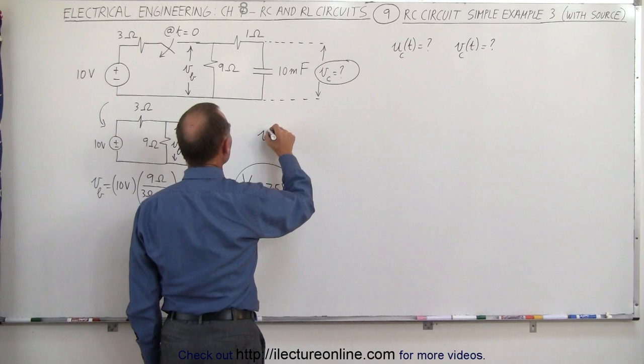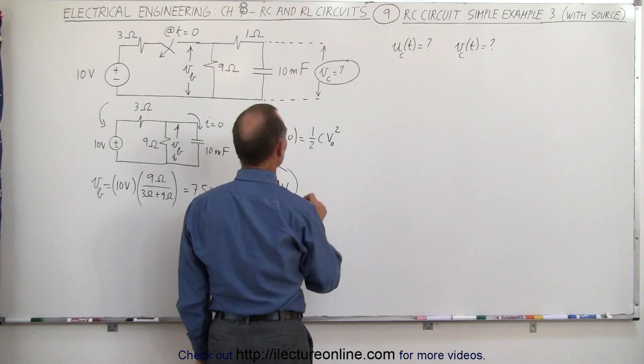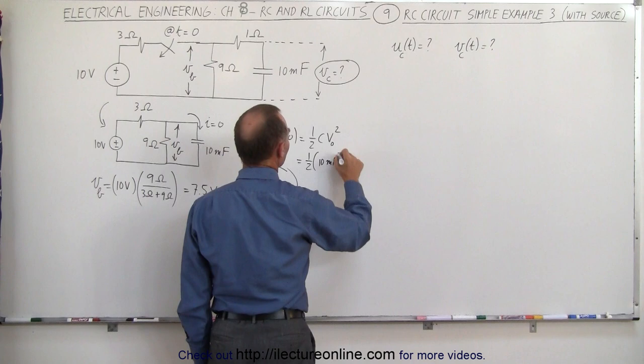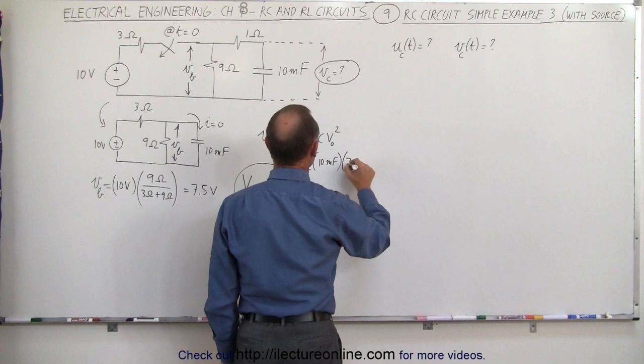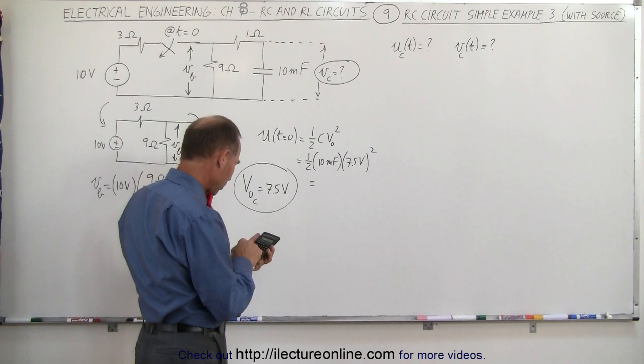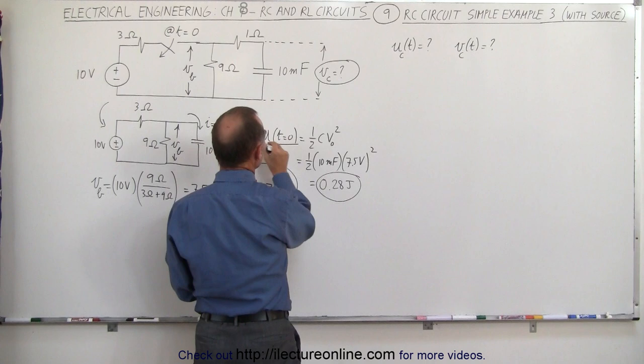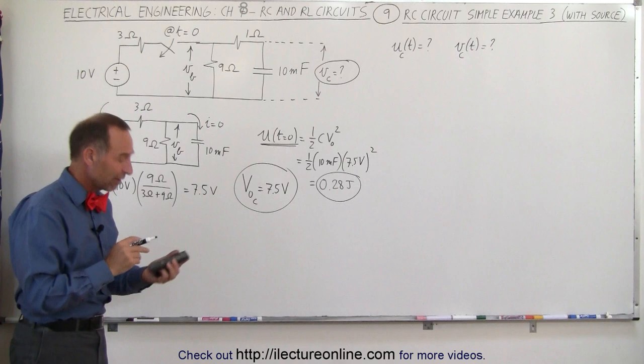Before we go on, let's also find the energy on the capacitor initially. The energy at time equal to zero is equal to one-half times the capacitance times the initial voltage squared. That would be one-half times 10 millifarads (10 to the minus 3 farads) times 7.5 volts squared. Squaring 7.5 and multiplying by 0.01 gives us 0.28 joules of initial energy. So at time equals zero, we have 0.28 joules and an initial voltage of 7.5 volts.